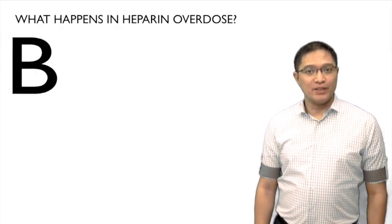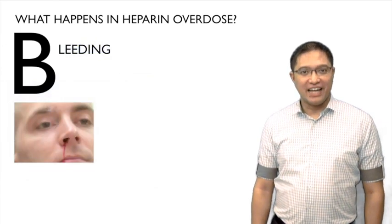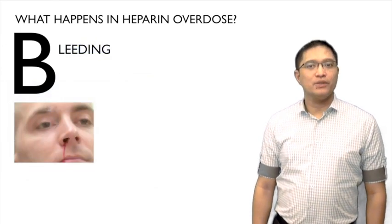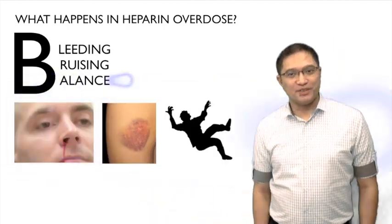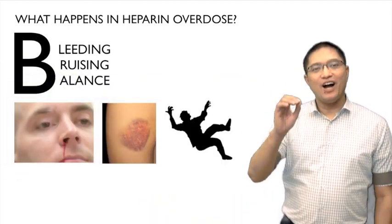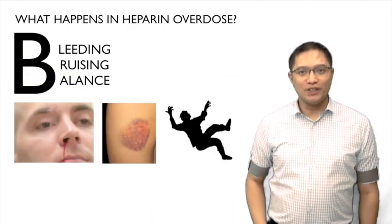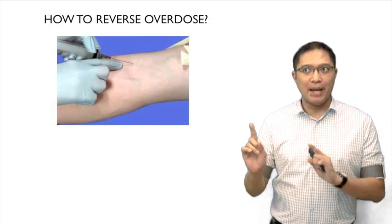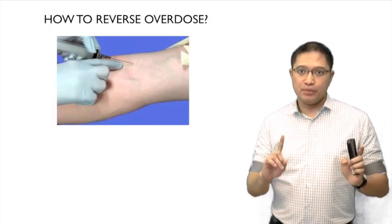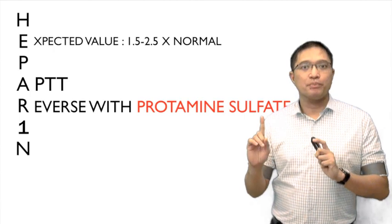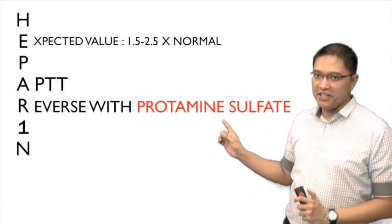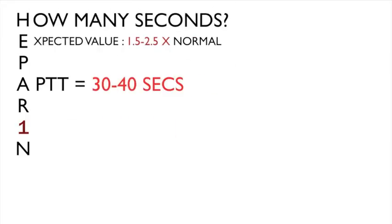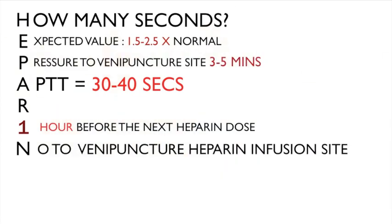What happens in heparin overdose? Signs include bleeding, bruising, and blood loss. So how do we reverse the overdose? We use a drug — and the antidote for heparin, remember the letter P in heparin, is protamine sulfate.